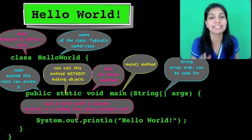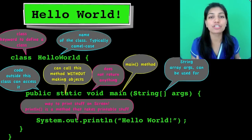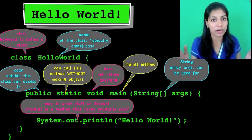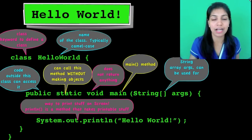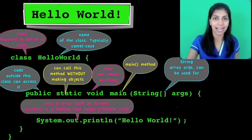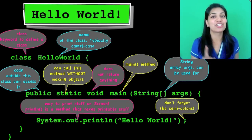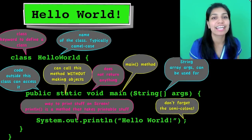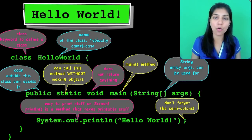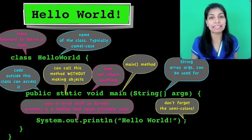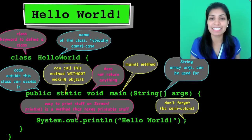Within the main method, System.out.println is the command used to print things on the screen — whatever you pass within the round brackets gets printed. And lastly, do not forget your semicolons. That is the Hello World program in all its glory.